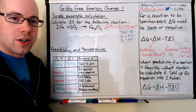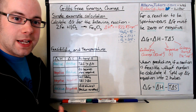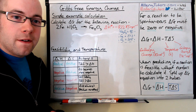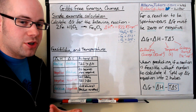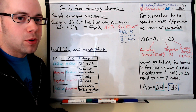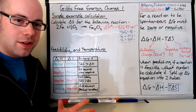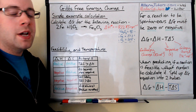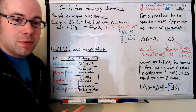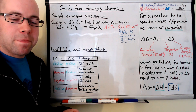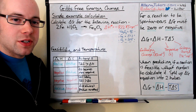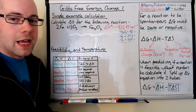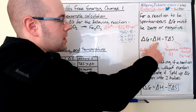Gibbs was named after Josiah Gibbs, an American mathematician who came up with the idea of free energy. Free energy is calculated by taking the enthalpy change of a reaction and subtracting the temperature multiplied by the entropy, combining enthalpy and entropy to decide if a reaction is feasible at a given temperature. Delta G is the symbol for Gibbs free energy, and if delta G is zero or negative, the reaction is feasible at that temperature. His equation is: delta G equals delta H minus T delta S.